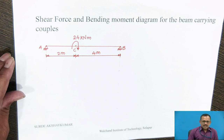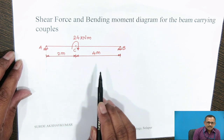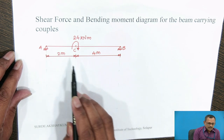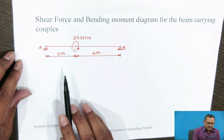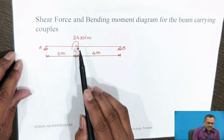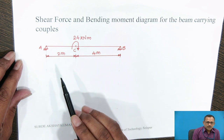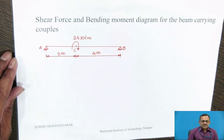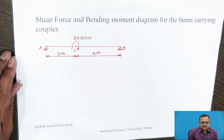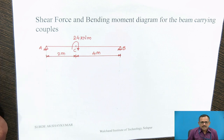Consider a simply supported beam of span 6 meters, hinged at A and B. From support A, a couple of 24 kilo Newton meter is acting in the clockwise direction. Draw the Shear Force and Bending Moment Diagram.